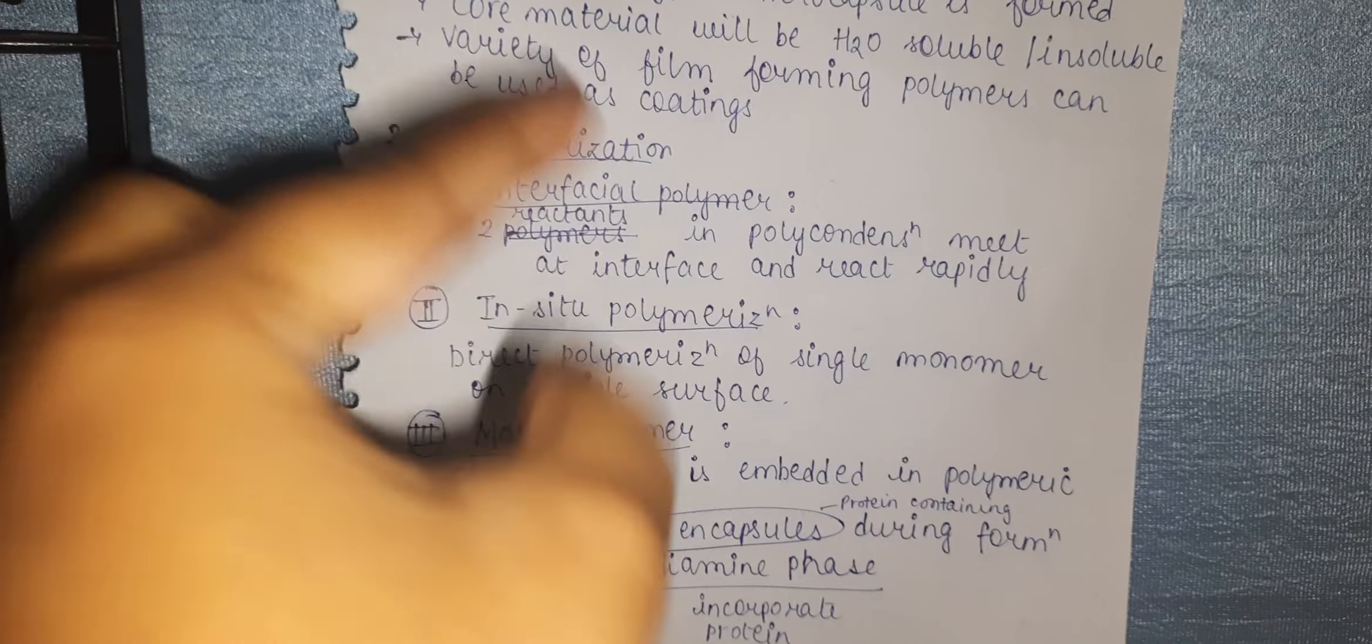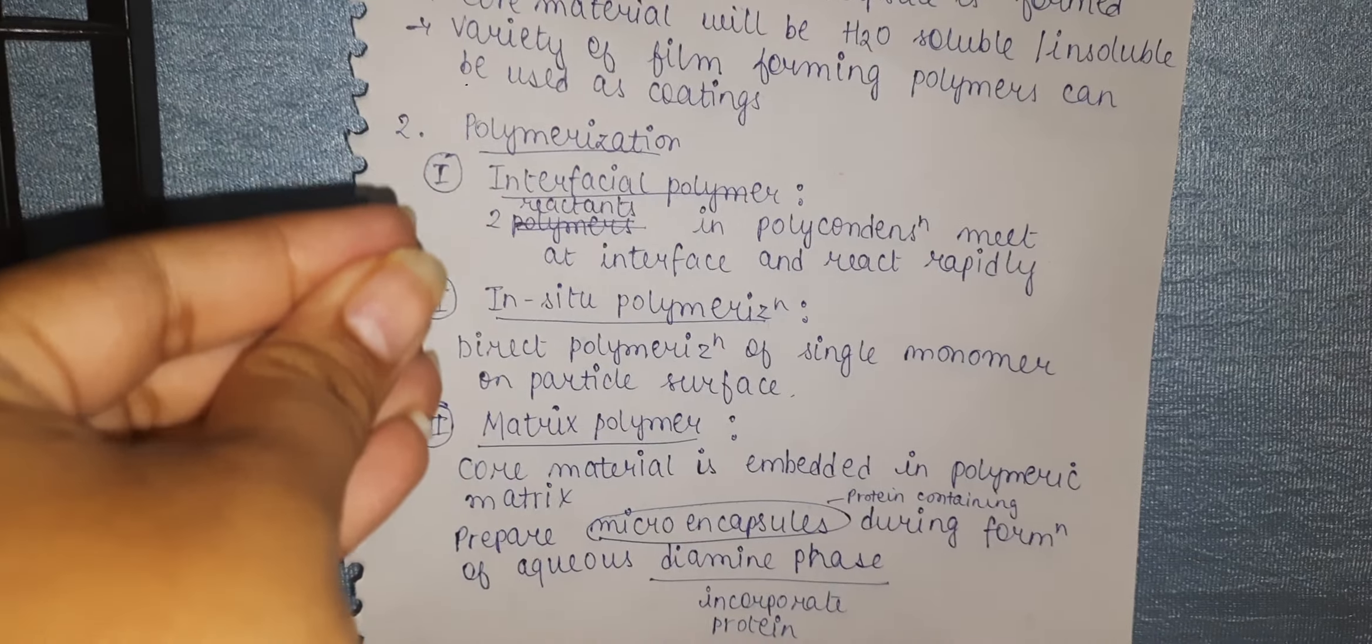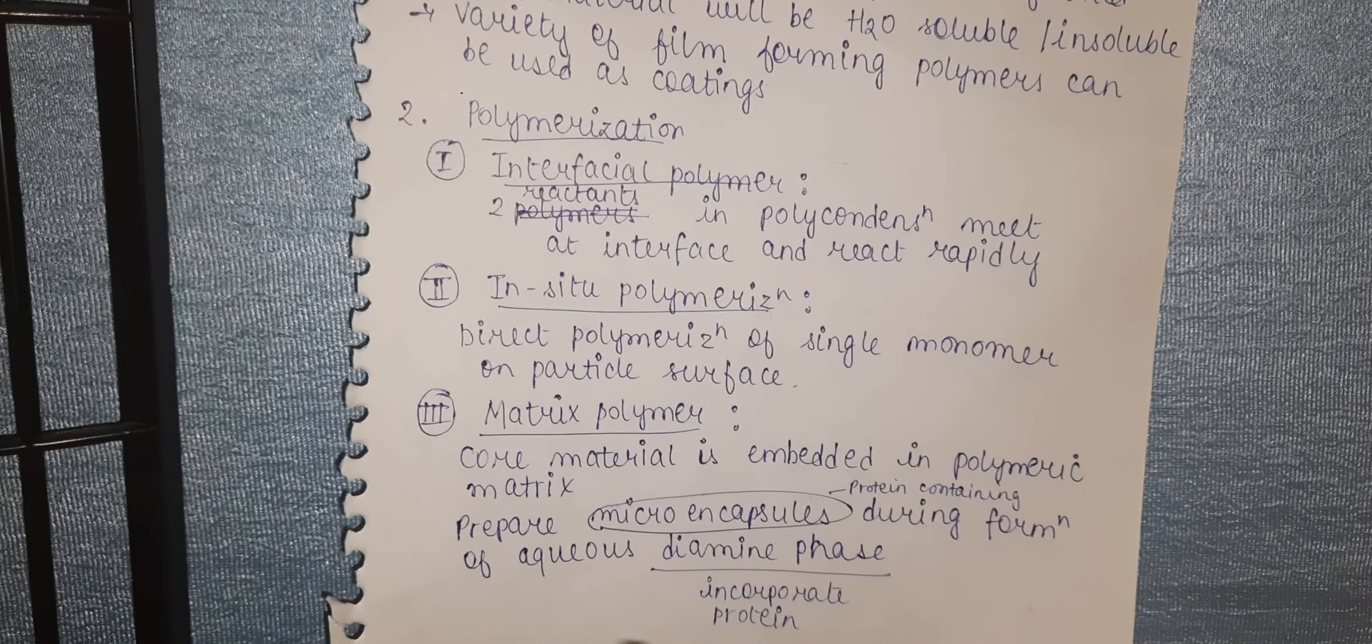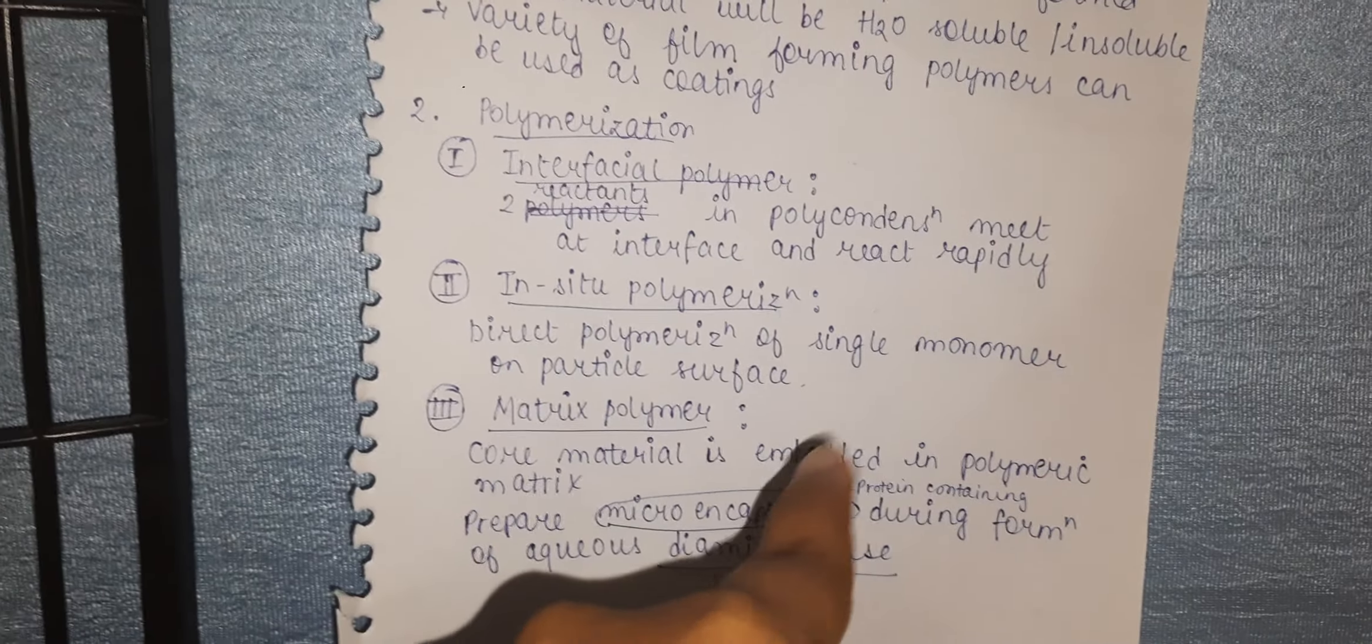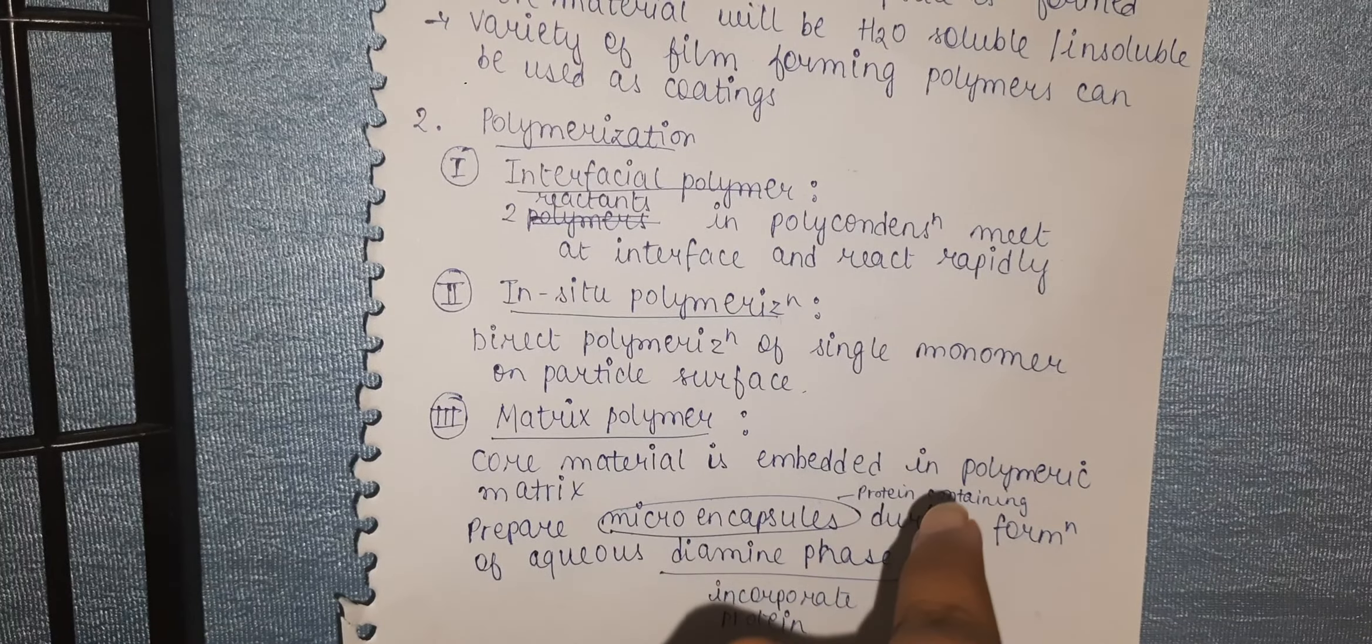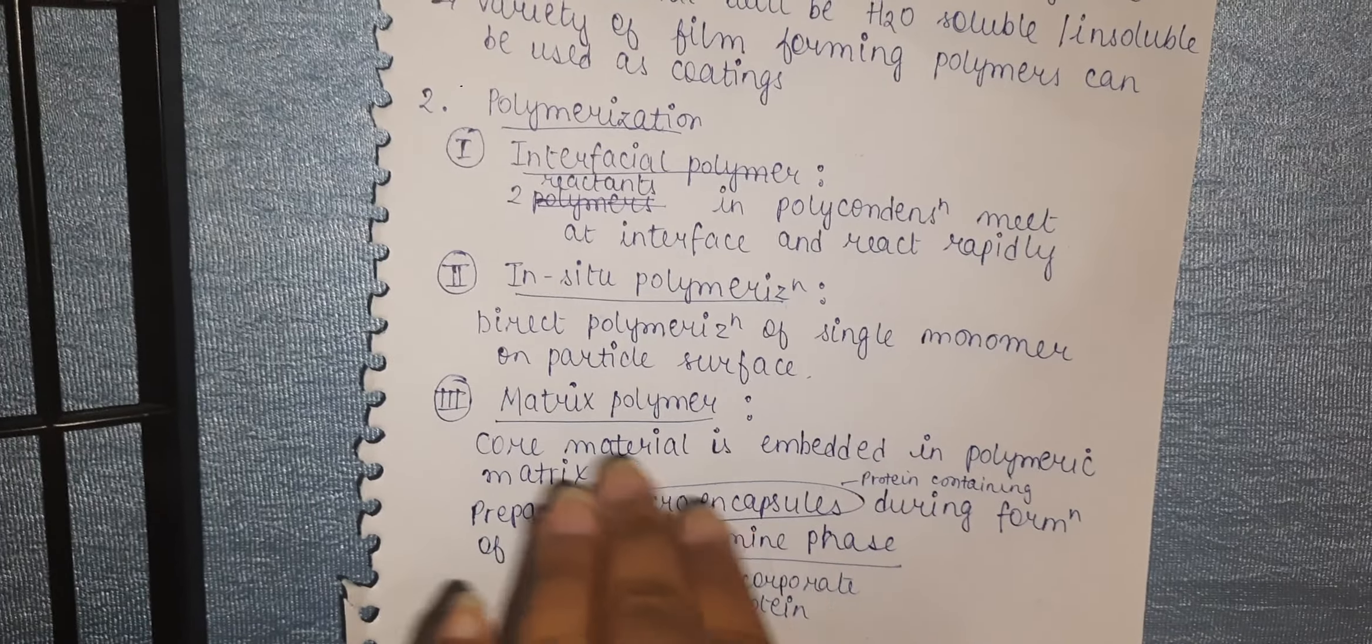The core material is embedded in the polymer matrix for microencapsulation preparation during aqueous diamine phase formation. The microencapsulation formed will contain protein, as the diamine phase is incorporated with the protein. This covers chemical microencapsulation methods.